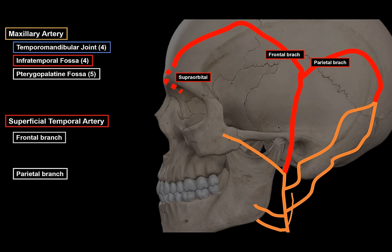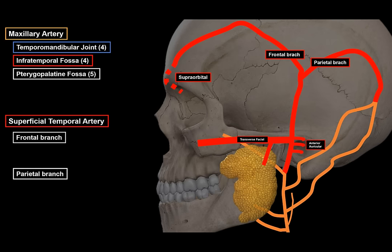The parietal branch of the superficial temporal artery curves upwards and backwards to the side of the head, lying very superficially to supply the parietal region, and connects with the posterior auricular and occipital arteries. It also communicates with the parietal branch of the other side. Side branches of the superficial temporal artery include: the anterior auricular branch supplying the auricle and external acoustic meatus; the transverse facial artery crossing the face to supply the parotid gland, masseter muscle, and skin of the cheek; and the middle temporal artery supplying the temporal muscle.